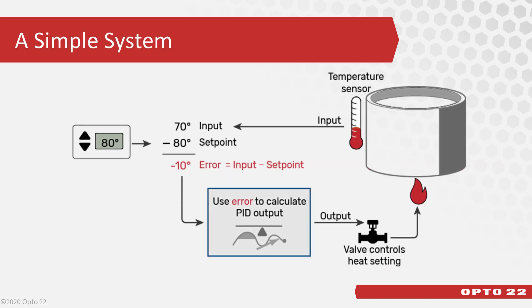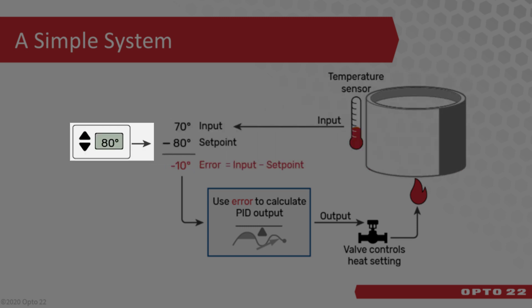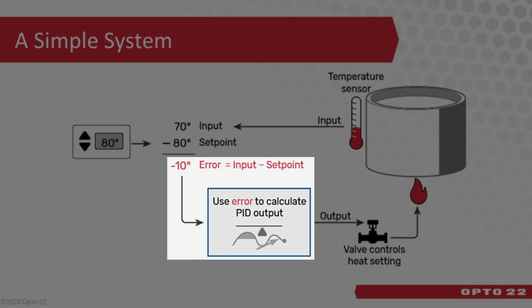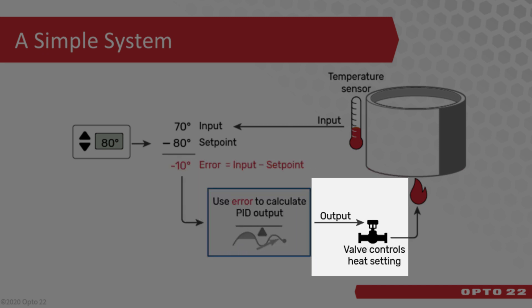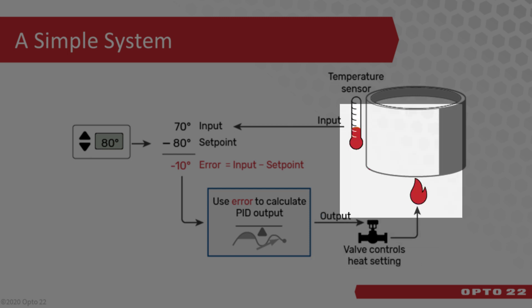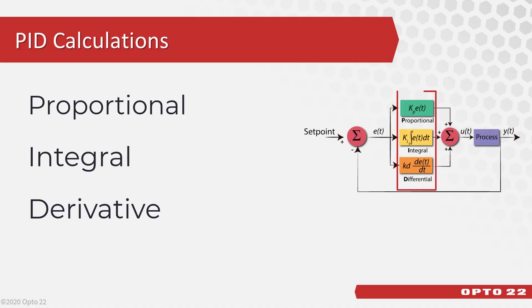In this simple tank heating system, the input or process variable is the temperature of the water in the tank, and the setpoint is set by a thermostat. The PID algorithm calculates the difference, or error, between the setpoint and input values. Using the error, the algorithm makes calculations to generate an output, which affects the process to get the input closer to the setpoint.